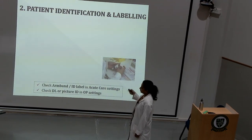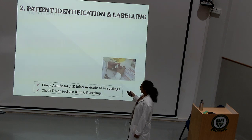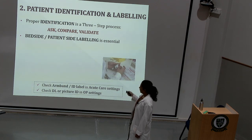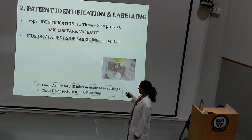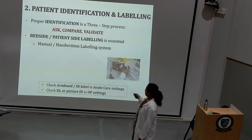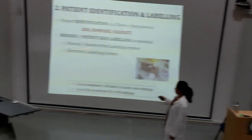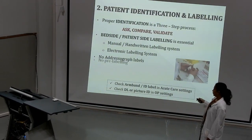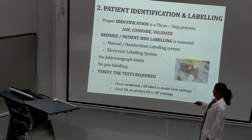Once you receive the laboratory requisition, you need to identify that you are collecting the sample from the right patient. Identification is a three-step process: you ask the patient for details, compare it with the requisition, and then validate and proceed for sample collection. Bedside labeling is very essential and can be in the form of a manual or electronic system. No pre-labeling is allowed. You also need to verify the test that has been requested.